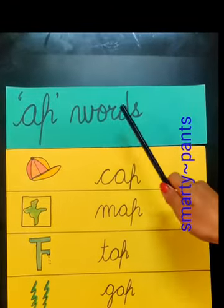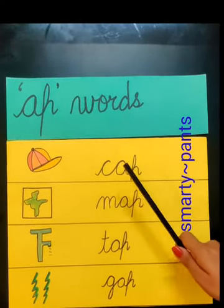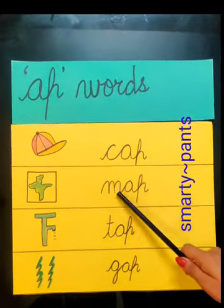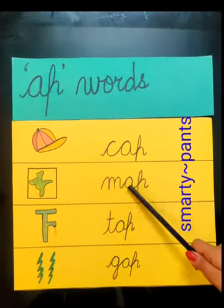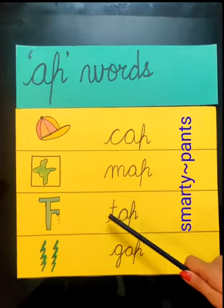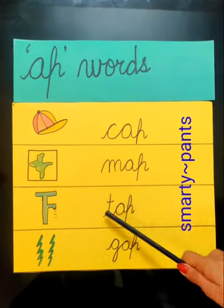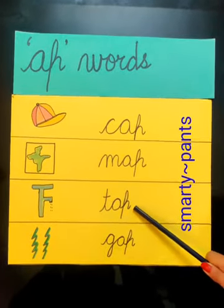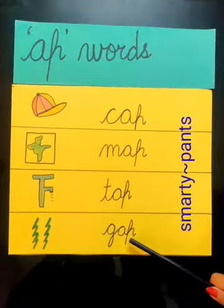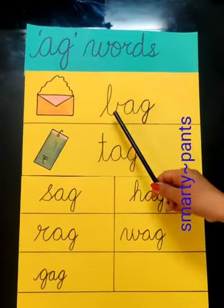'Ap' words. C, A, P — Cap. M, A, P — Map. T, A, P — Tap. G, A, P — Gap.